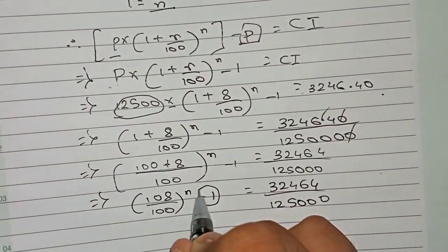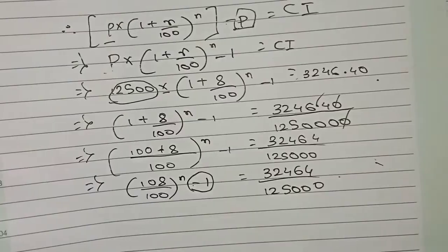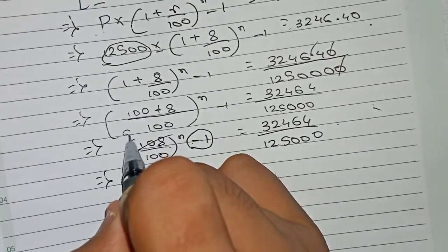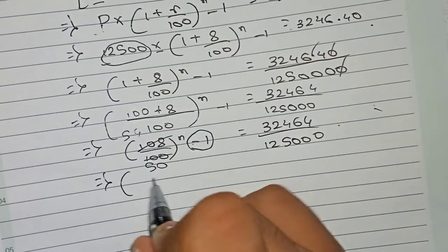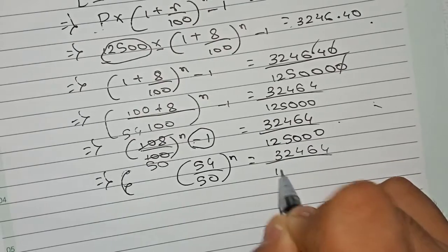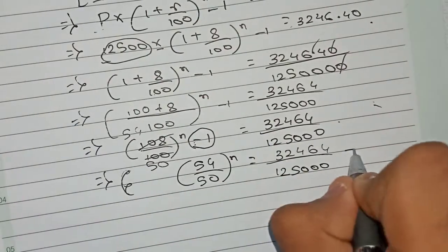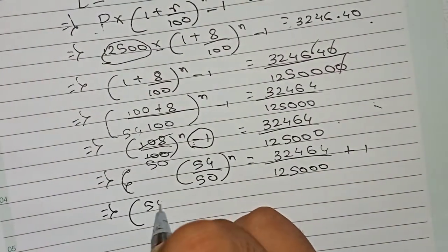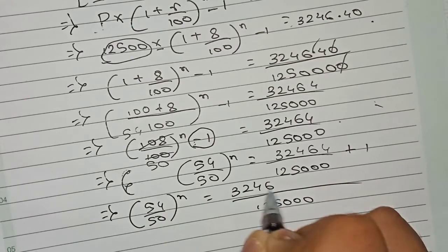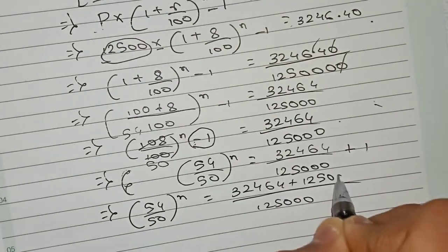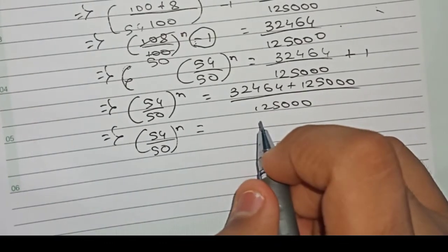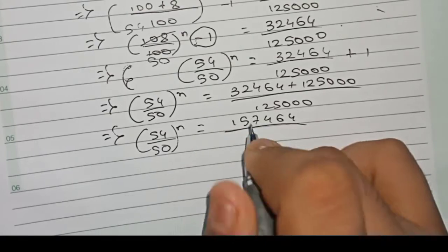We take minus 1 to the other side, where it becomes plus 1. Simplifying 108/100 by dividing by 2 gives 54/50. So (54/50)^n = 32464/1250000 + 1, which means (54/50)^n = (32464 + 1250000) / 1250000 = 1282464 / 1250000.